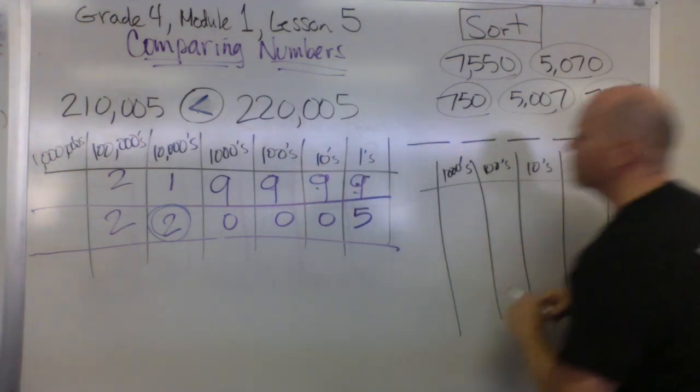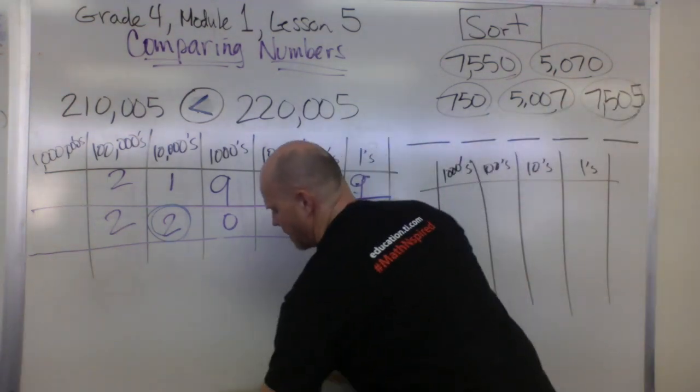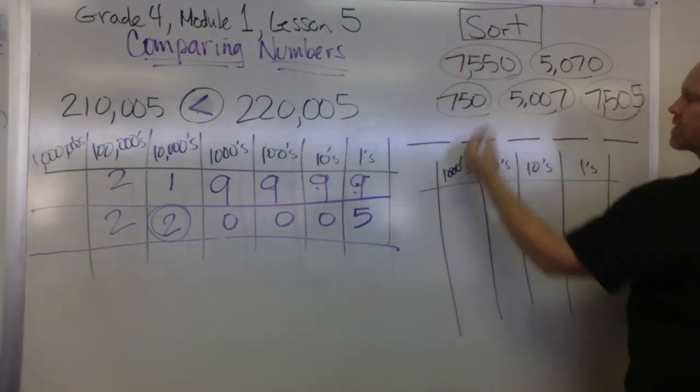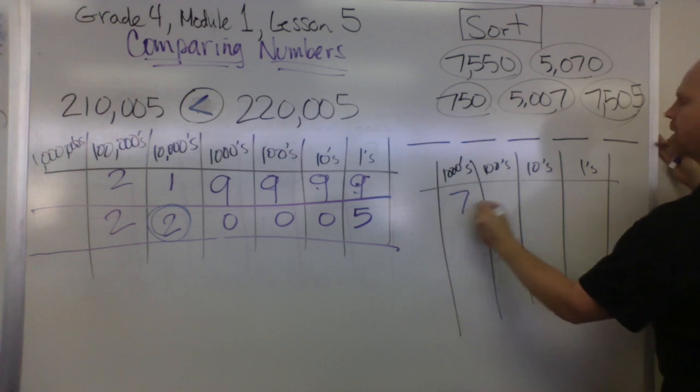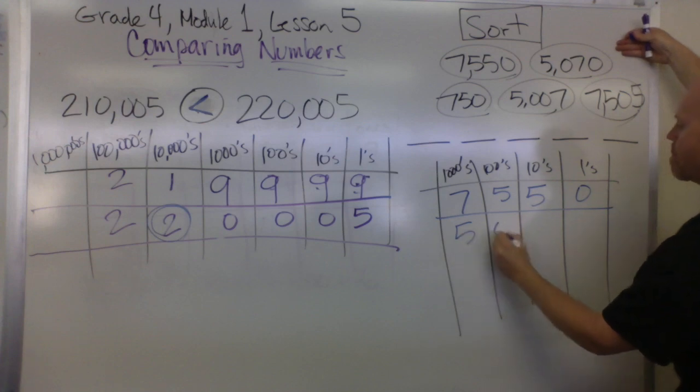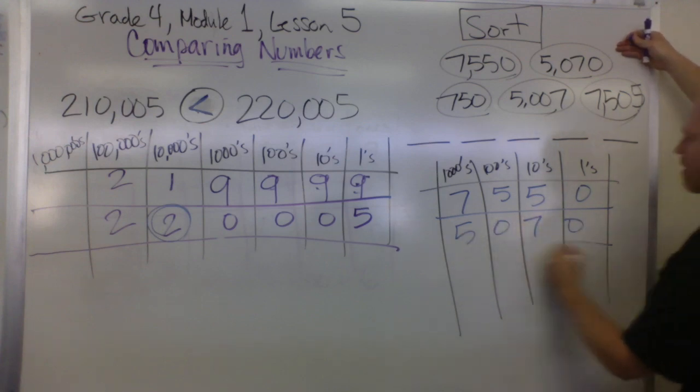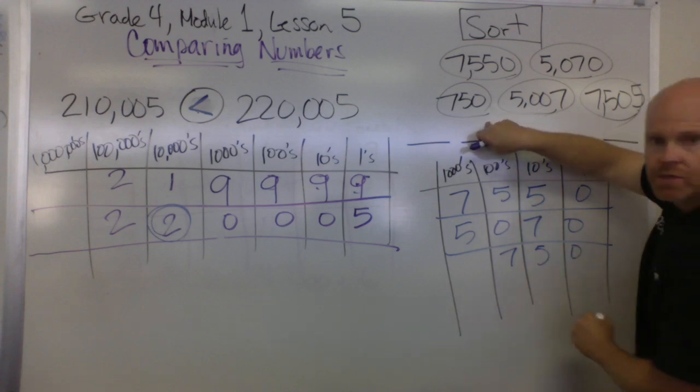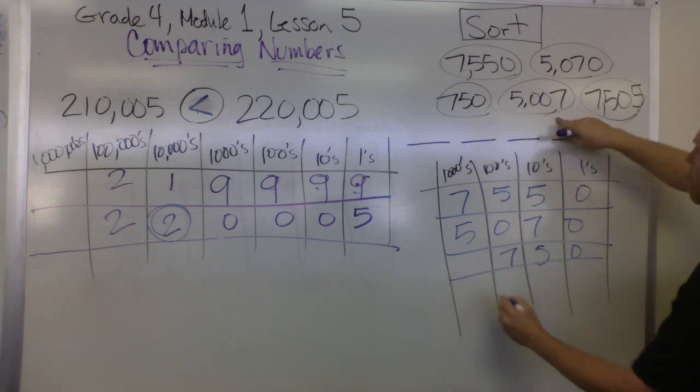Now we're going to put our numbers into this place value chart. Let me get my cool colors here. In no particular order, I'm going to start here and put this guy here, this guy, and then this guy. Then we're going to do this guy, and lastly this number here.